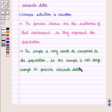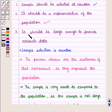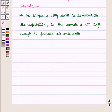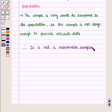Thus, the third condition is not satisfied. And therefore, we conclude that it is not a reasonable sample. This completes our session. Hope you enjoyed this session. Thank you.